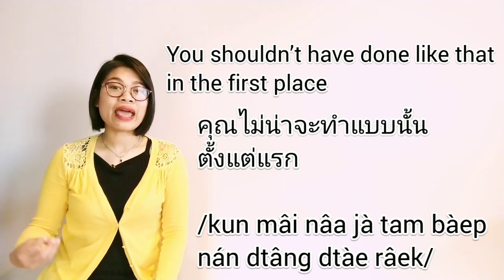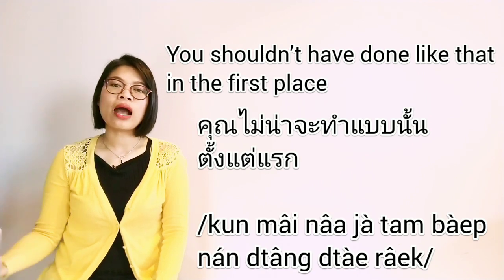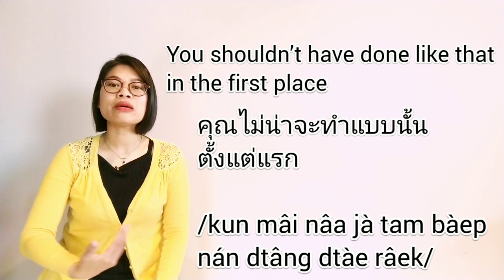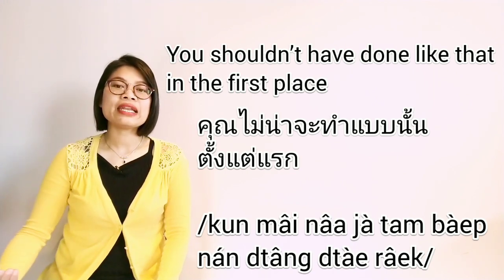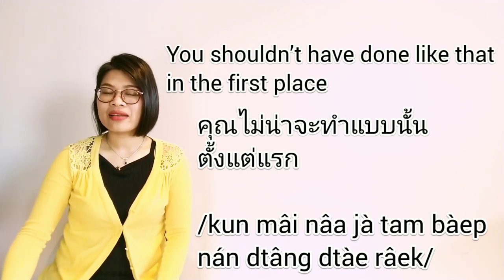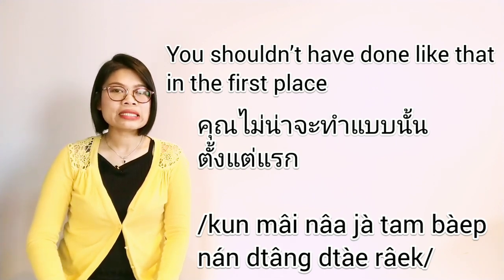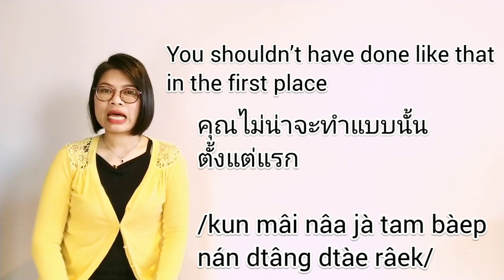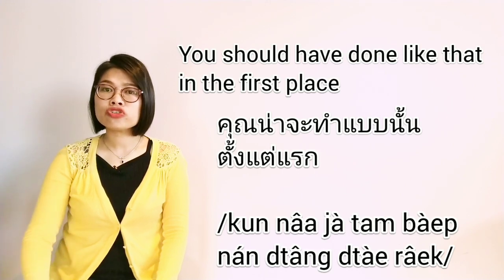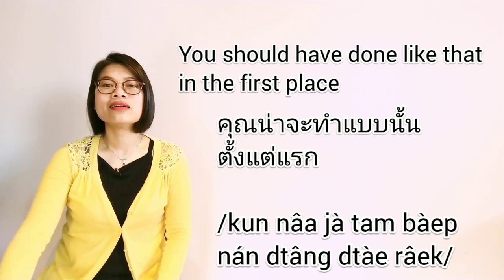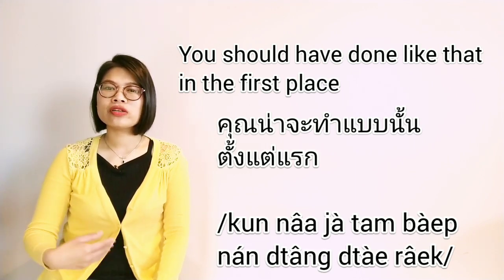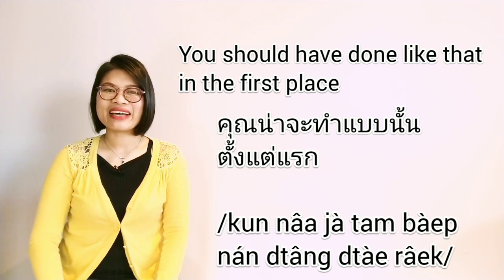ตั้งแต่แรก acts like an adverb of the sentence, so it comes at the end. When you've finished forming the main subject, verb, and object, say ตั้งแต่แรก at the end: คุณไม่น่าจะทำแบบนั้นตั้งแต่แรก. On the other hand, if you want to say 'You should have done like that in the first place,' just drop ไม่ and say คุณน่าจะทำแบบนั้นตั้งแต่แรก.